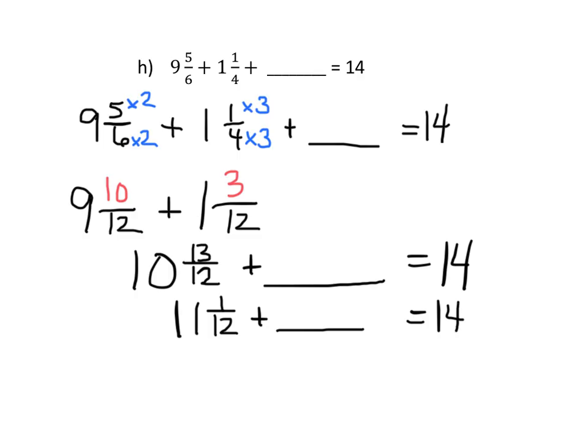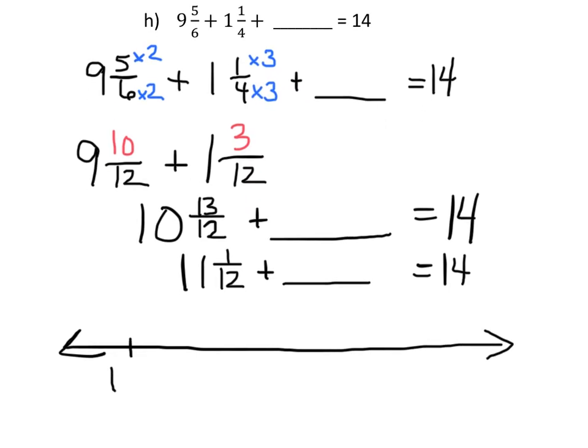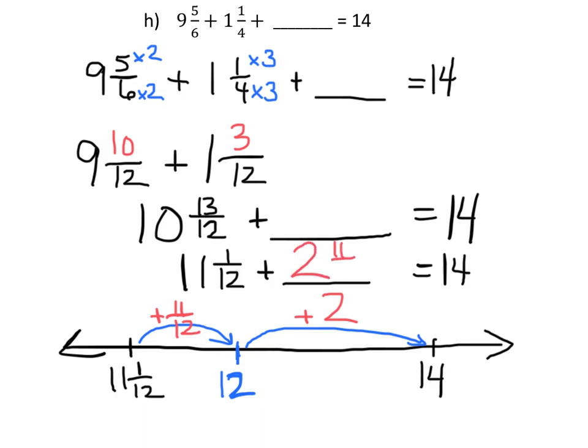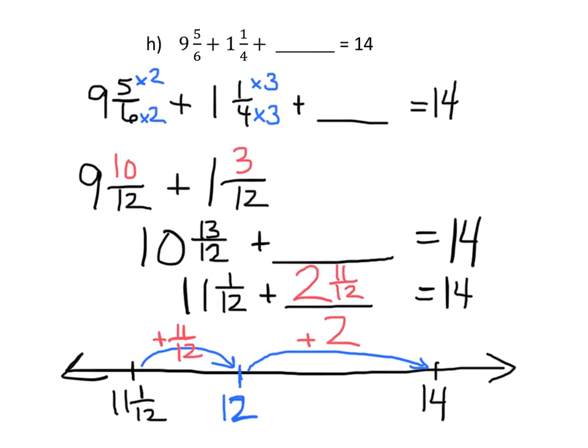Now here I would use our nice little empty number line. We're going to start with 11 and 1 twelfth and we need to figure out what we have to add to it to get all the way up to 14. Well, first thing I'm going to do is figure out what we can do to bump it up to the next whole number which is 12. That means we have to add 11 twelfths. So that bumps us up to 12 and then 12 plus 2 gives us 14. So we could see our correct answer, our missing value is 2 and 11 twelfths.